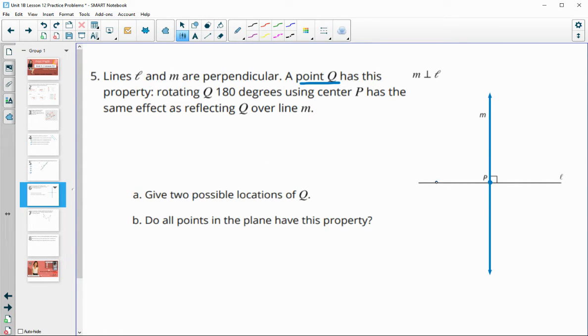So our point P, give two possible locations, is going to be on this line L. Okay, so Q could be here. And I'm just going to call it Q1. Because if we reflect it, it'll end up here. And if we rotate it 180, it'll end up there. So there's one spot. And here's another spot it could be.